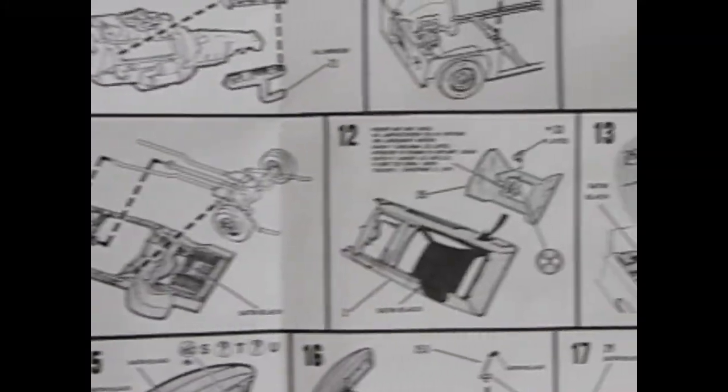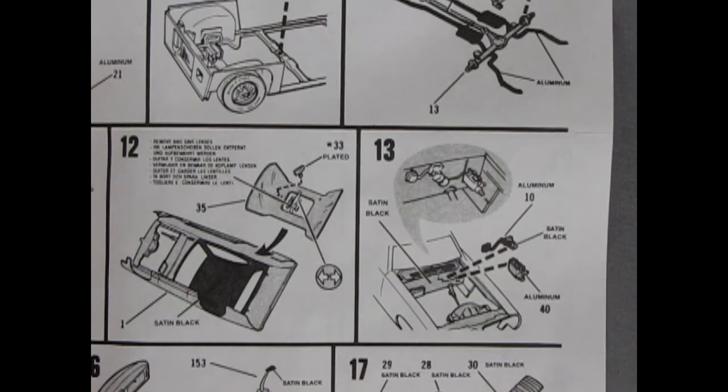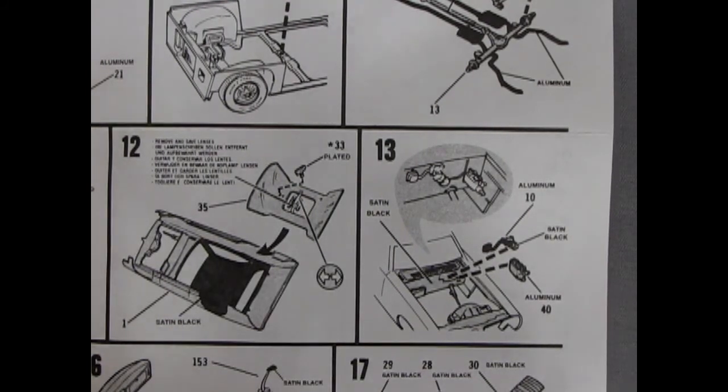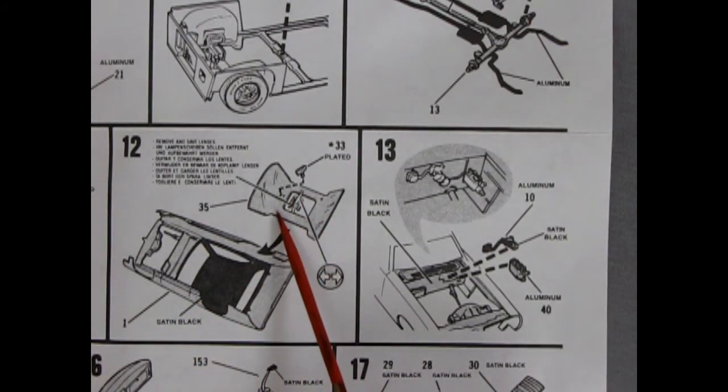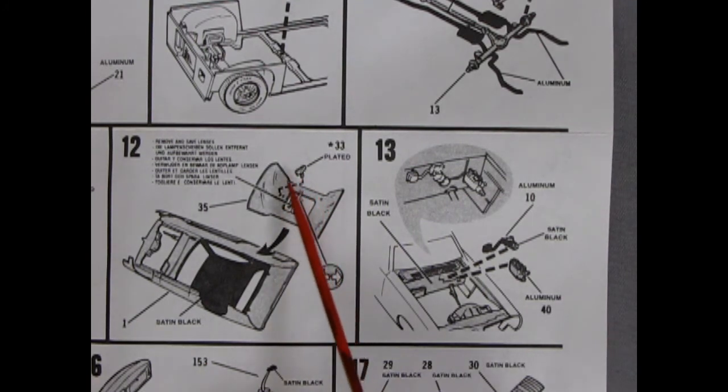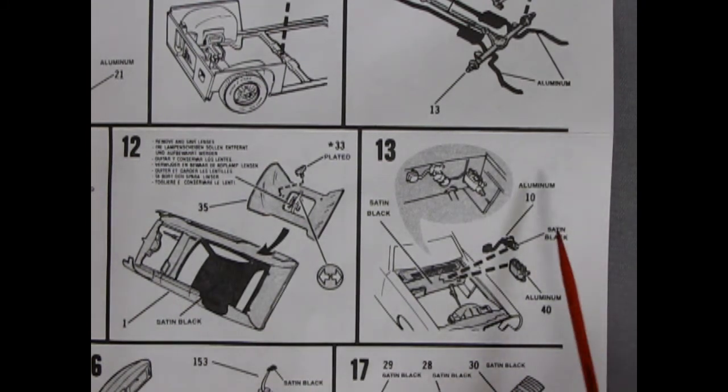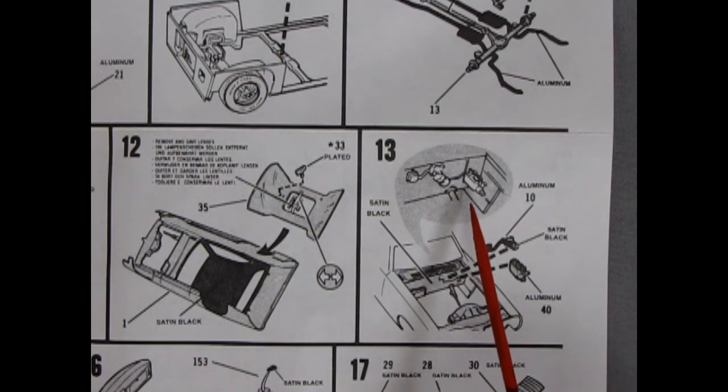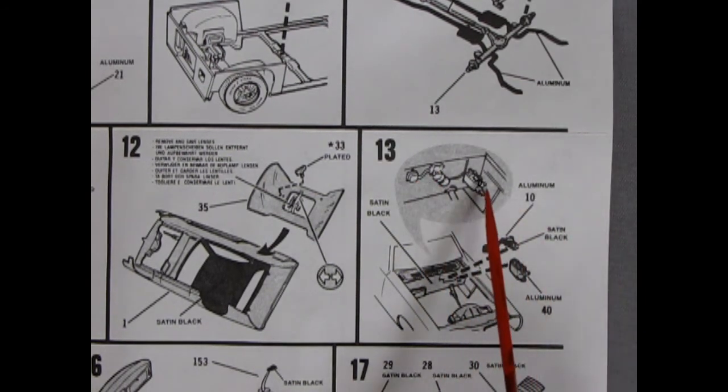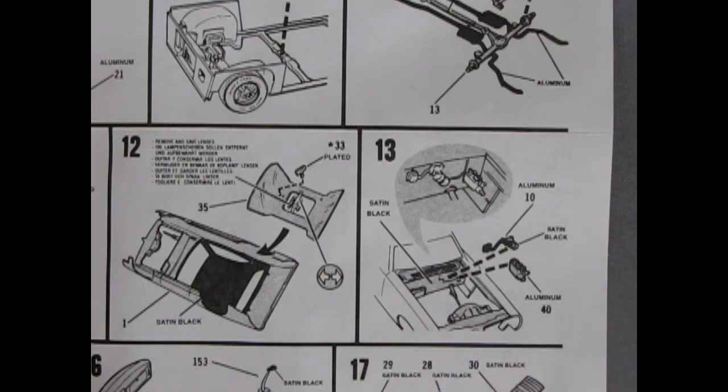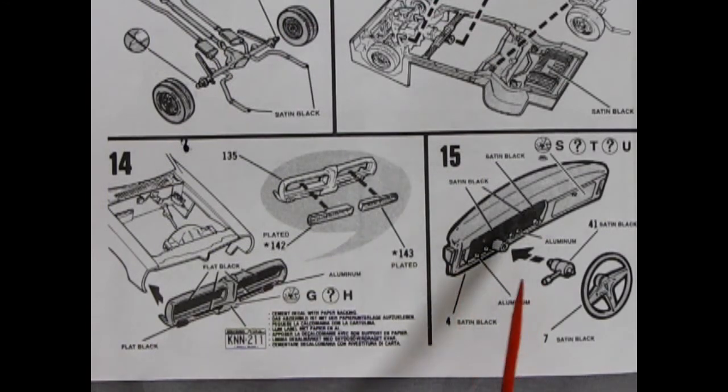Then we move into panels 12 and 13 which show our glass being dropped into the car. Again there's something in the middle here you got to remove. You put in your little rearview mirror there too before your glass goes in. And paint the inside of your roof satin black. And then here we have our firewall and you add in the little thingy here. And our brake master cylinder will go in there. And all this is painted satin black inside under your hood. Panels 14 and 15 right here.